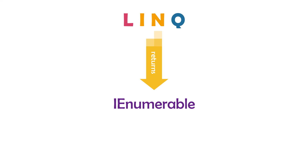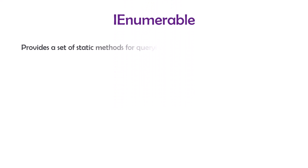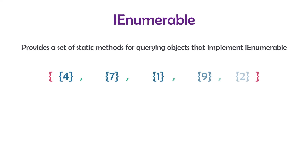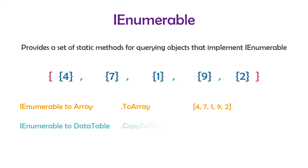LINQ returns an IEnumerable output. It provides a set of static methods for querying objects that implement IEnumerable — it's like a collection of elements. The structure of an IEnumerable variable has outer curly brackets, within which we have different elements, each also set within curly brackets. We can convert this variable to another type using a method — for example, to convert to array we use the ToArray method, or to convert to a data table we use the CopyToDataTable method.